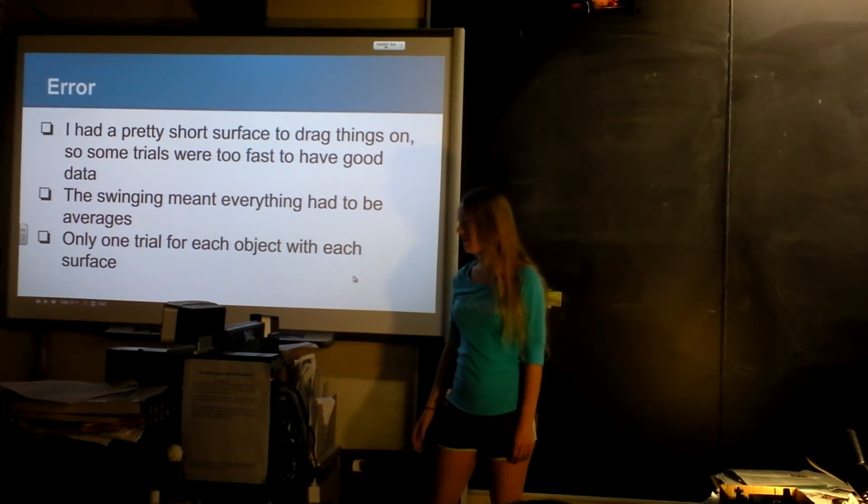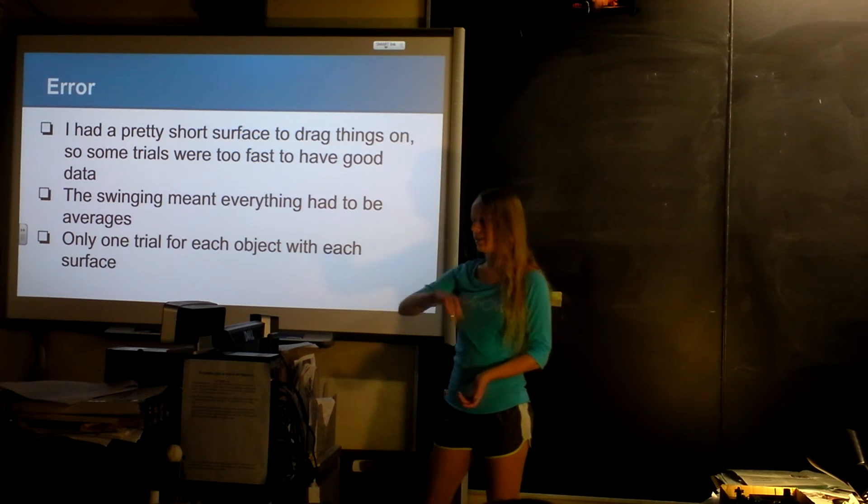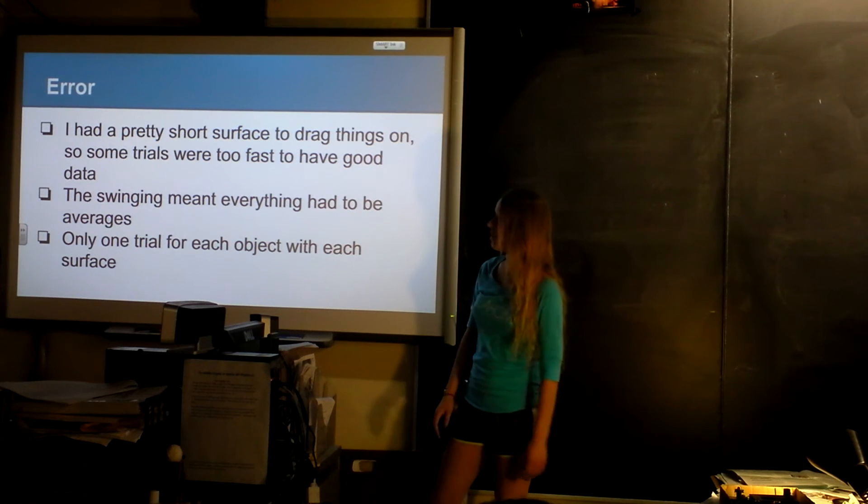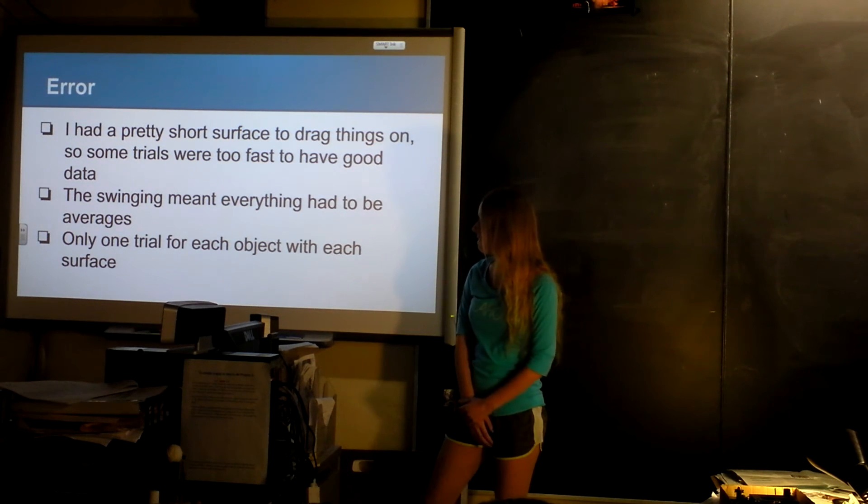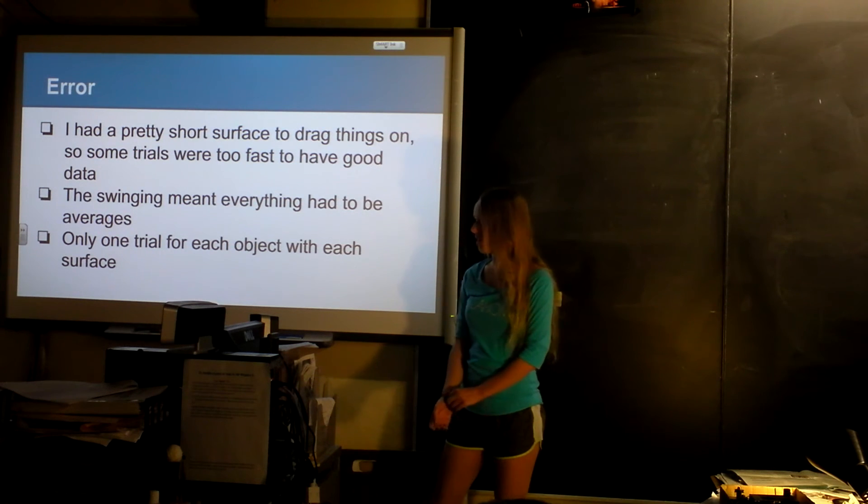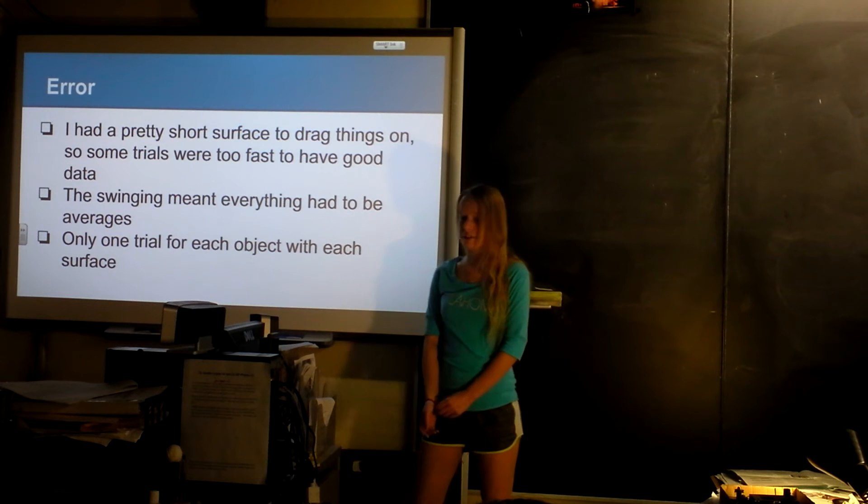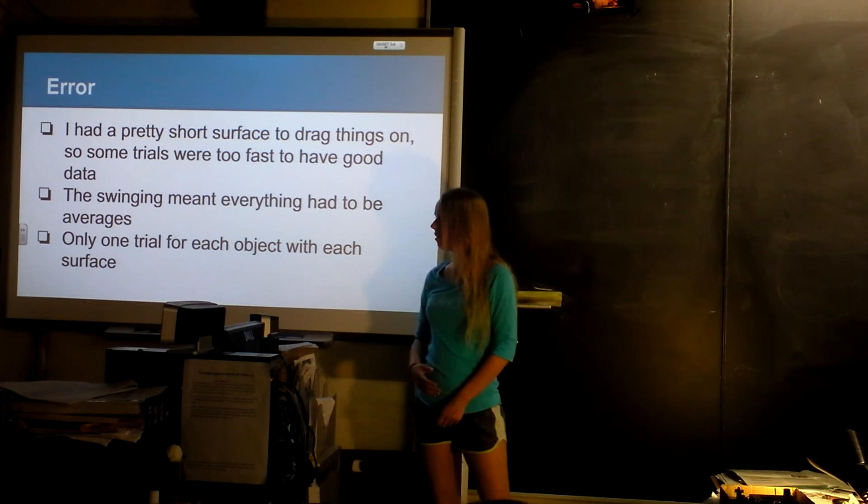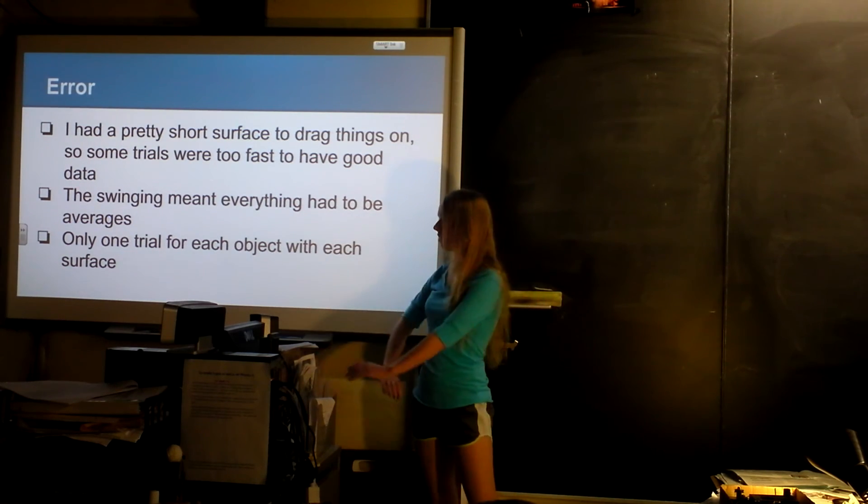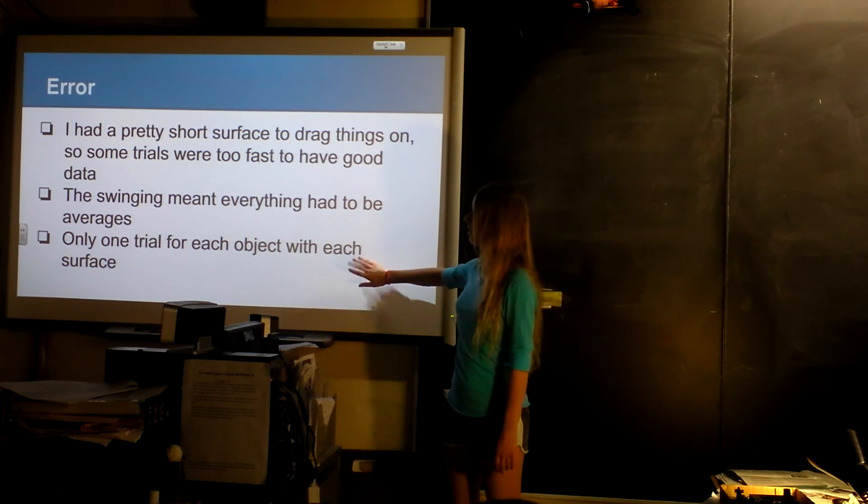I had a lot of error because I had a really short surface. That's why for some of them I would only get through like halfway of a sine wave, and then I really didn't know what that meant because I couldn't see an average. I had to take averages for all my lines and everything because things were swinging back and forth. I had 24 trials. I only did one for each combination of the object and the surface. That might be easier if I had time to do lots.